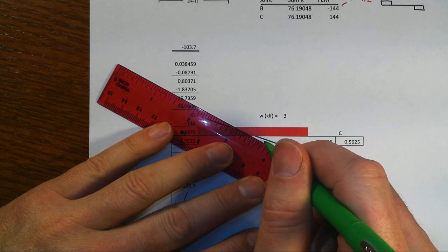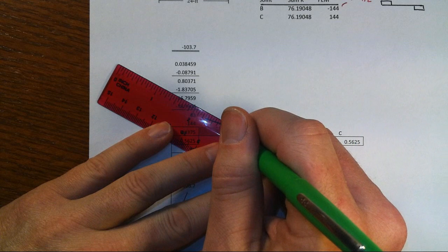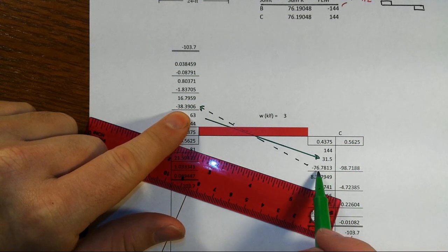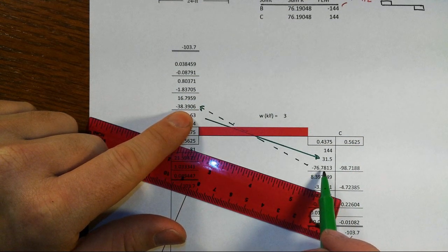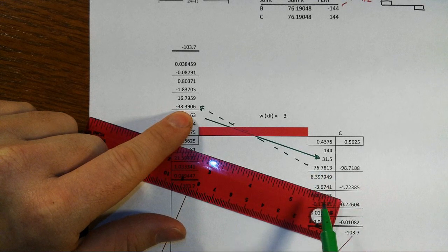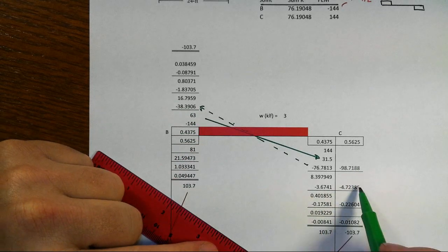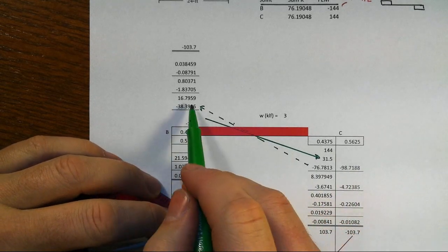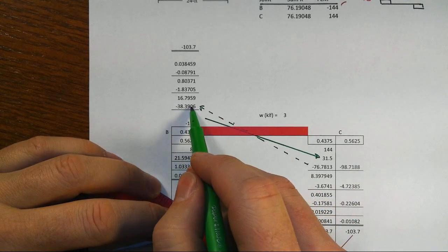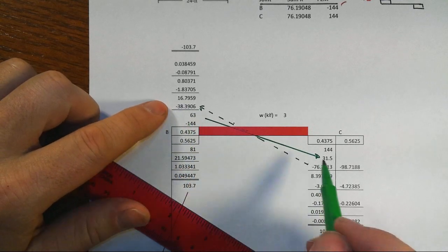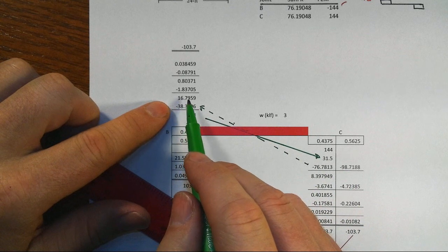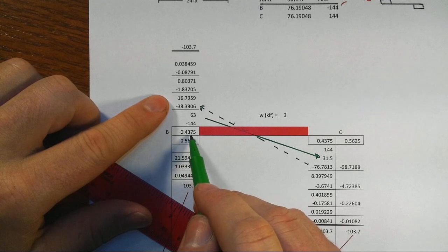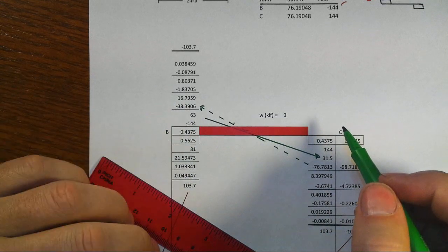That's where the carryover of a half, the minus 38.4, comes from—half of this value of 76.813. Same thing with the right-hand column, I'm just going to let all those add up and then at the end do the carryover. Back on joint B then, we've got minus 38.4. We've locked down C. We're going to release B and we'll have opposing moments that develop in this ratio or association of the distribution factor, the ratio of the relative stiffnesses. That's where the 16.8 comes from.